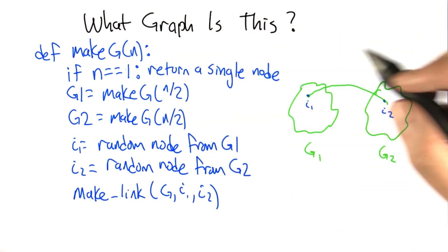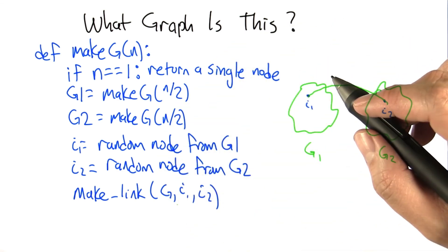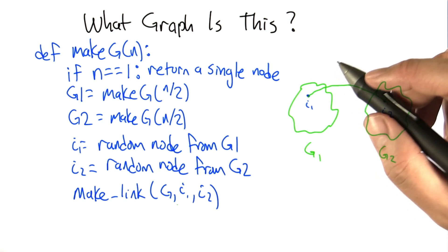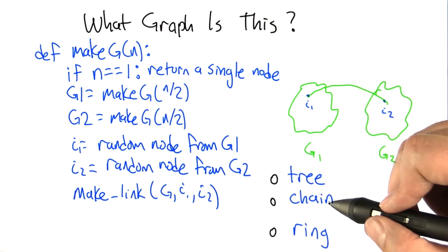So maybe take n to some small power of 2, like 4 or 8, and trace through this pseudocode to try to figure out what kind of graph pops out. So here are 3 choices to choose from. What we get out, is it a tree, is it a chain, or is it a ring?